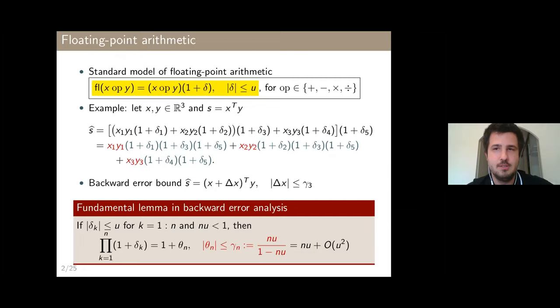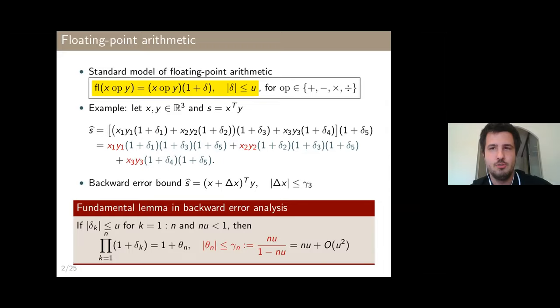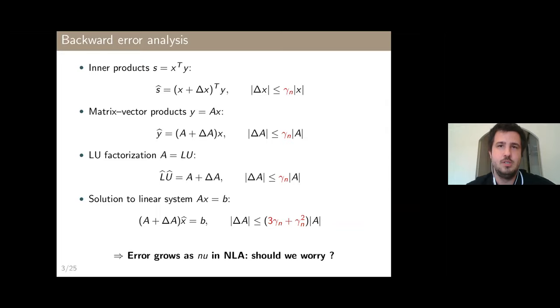We have five rounding errors, but at most three rounding errors propagate on any given component. That's because the vectors are in R³; for an inner product in Rⁿ, we'll have a backward error bound bounded by gamma_n. Importantly, this is also true for many other computations in linear algebra, like matrix-vector products, the factorization of matrices, the solution of linear systems, and so on. We have this gamma_n constant appearing almost everywhere in linear algebra.